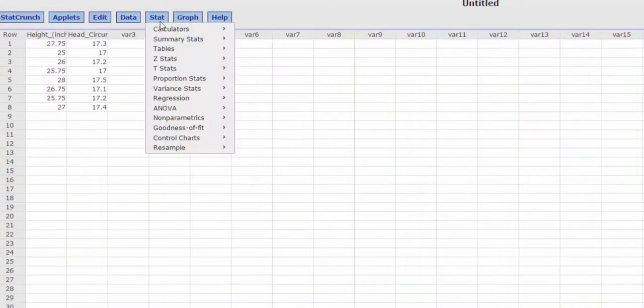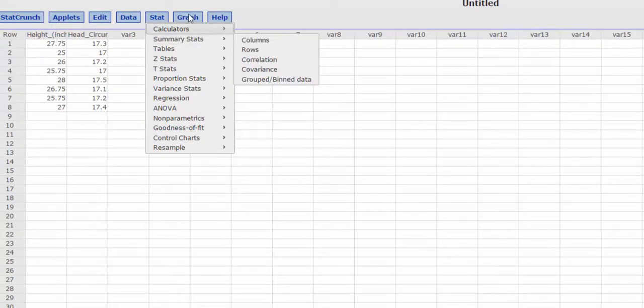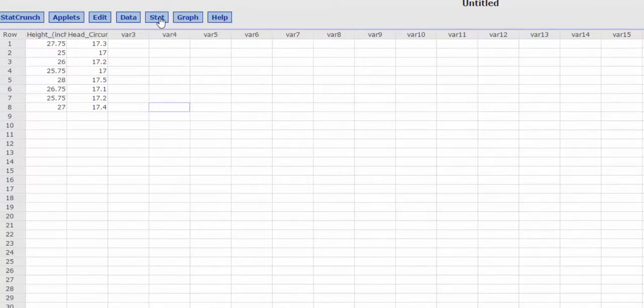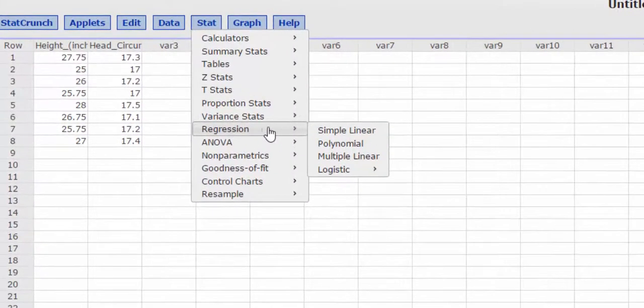So now normally to do a scatter plot, I could just press graph and go down to scatter plot, but I actually want to see the linear regression equation. So if I press stat, regression, simple linear,